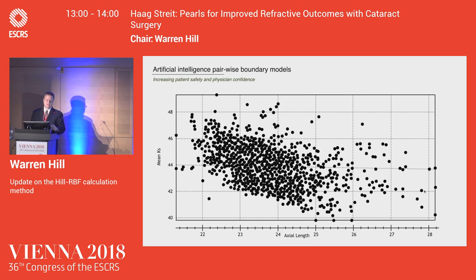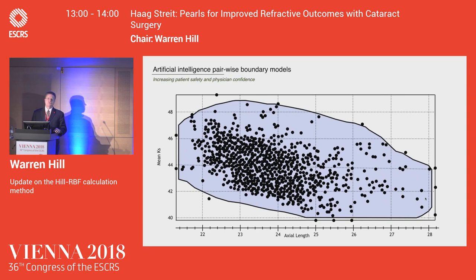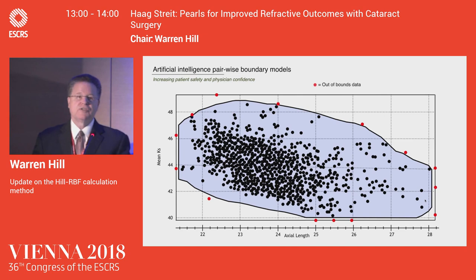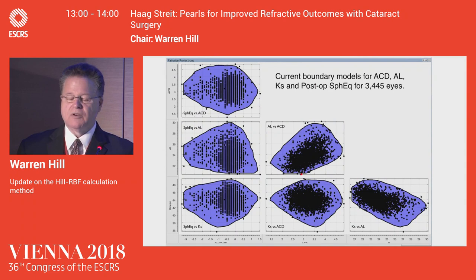Here's what's called a pairwise boundary model — the relationship between central corneal power and axial length. We have the ability to draw boundaries around this. If the data points fall within these boundaries, we can predict the outcomes. This is a standard engineering tool. Within the shaded area of this boundary model, if data points fall within this area and five other boundary models, we have a 90% chance of a half-diopter accuracy in the calculation. This is what's referred to when you see an inbounds or out-of-bounds calculation.